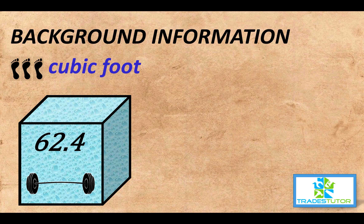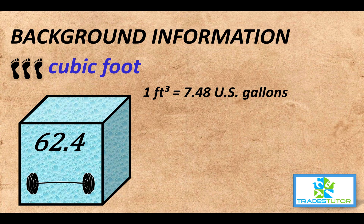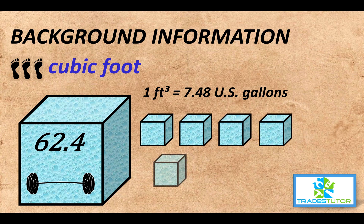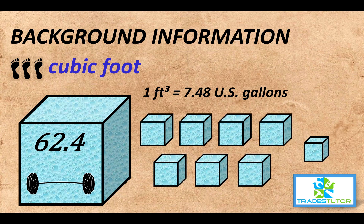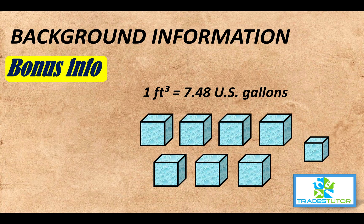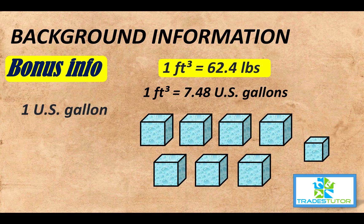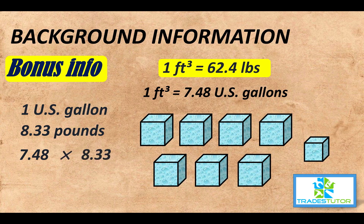Now let's look at the U.S. gallon. If we took a container that holds one U.S. gallon, we would get 7.48 of them from a cubic foot. Here's some more bonus info: one U.S. gallon weighs a little bit less than an imperial gallon — it weighs 8.33 pounds. There are 7.48 of them in a cubic foot, and 7.48 times 8.33 pounds gives you 62.4 pounds. So all the numbers come together in that 62.4 pound scenario.